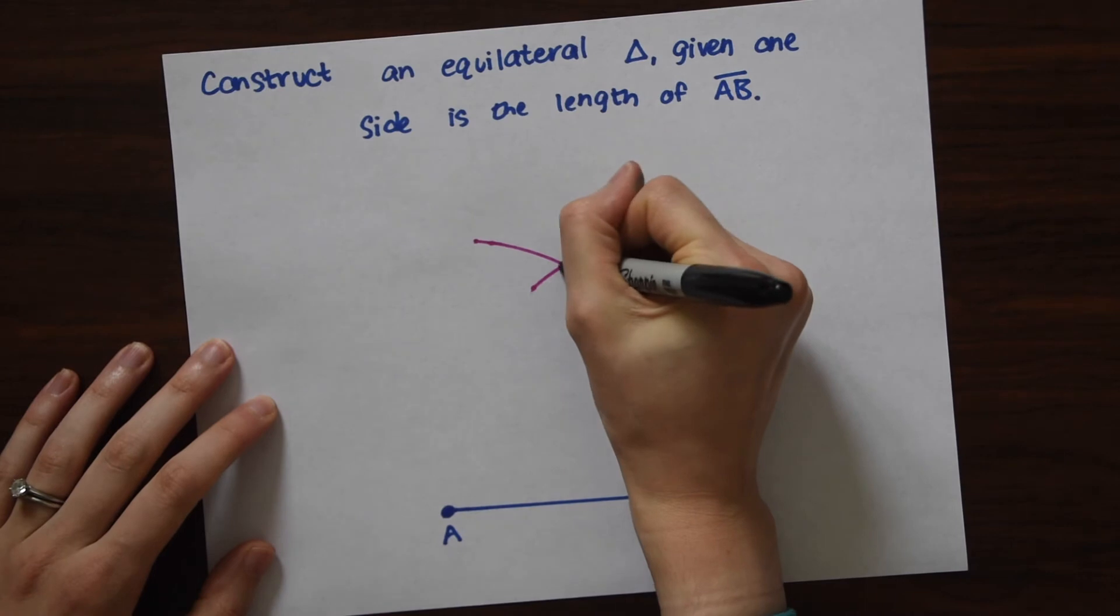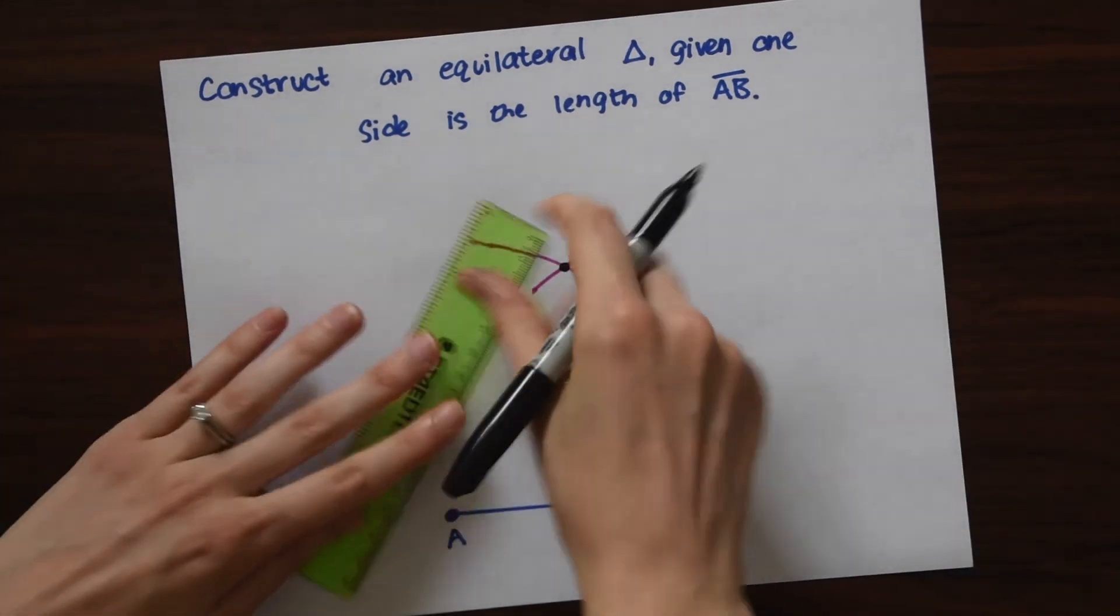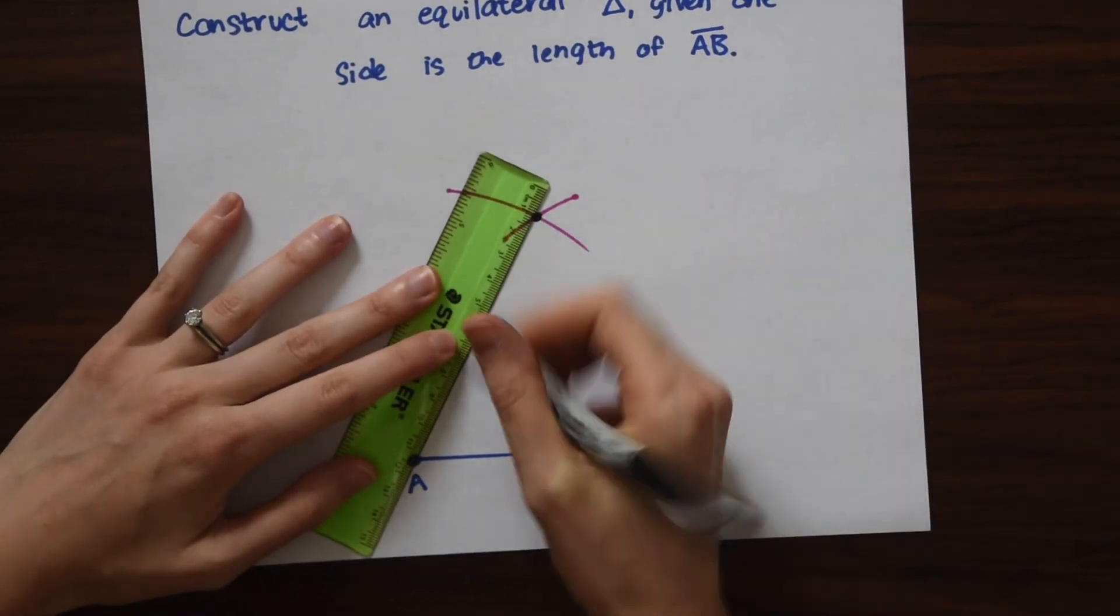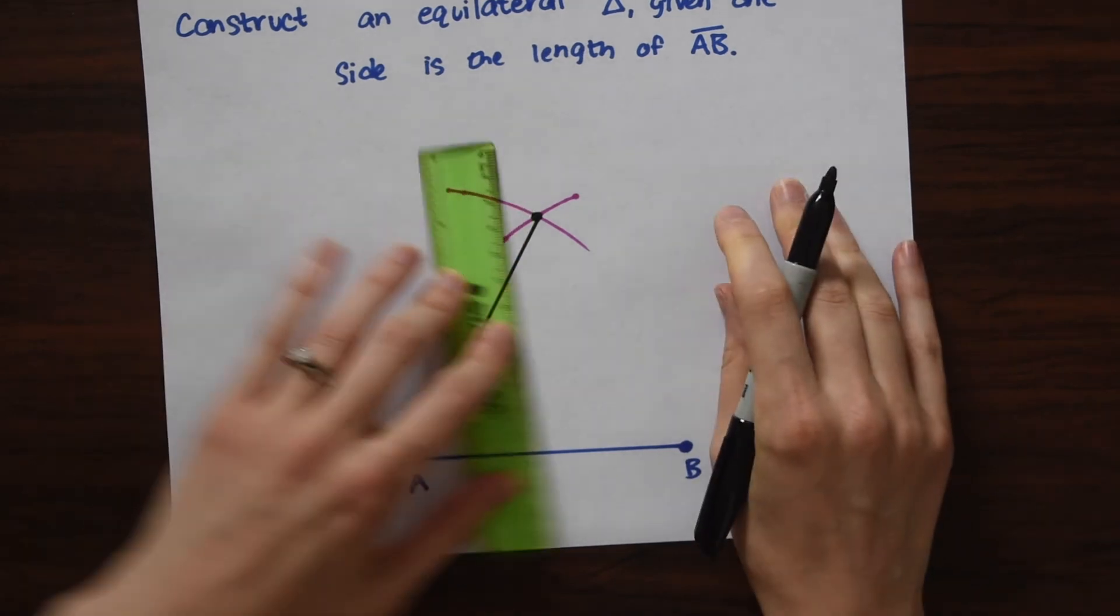So let's just mark where they intersect. Now we're going to take our ruler out and we're just going to draw a line from A to our new point.